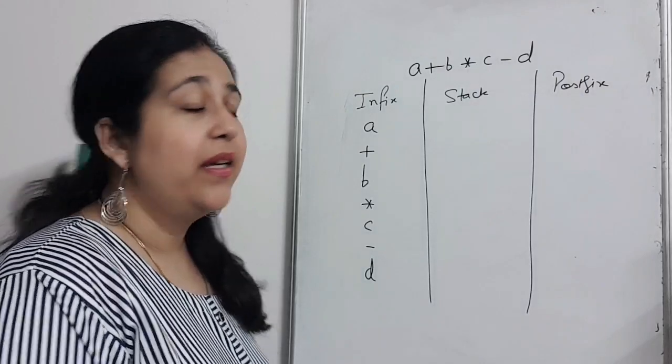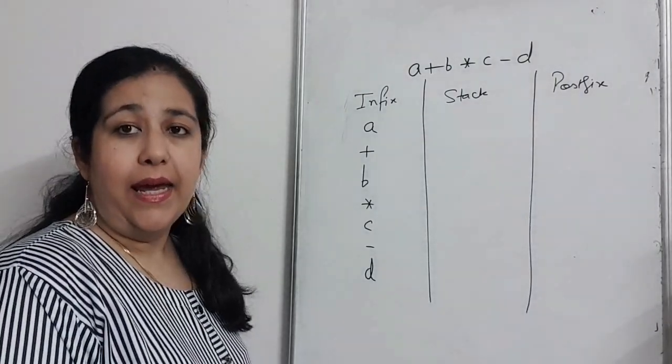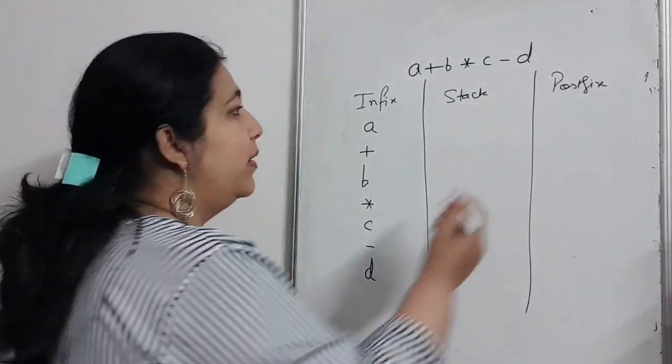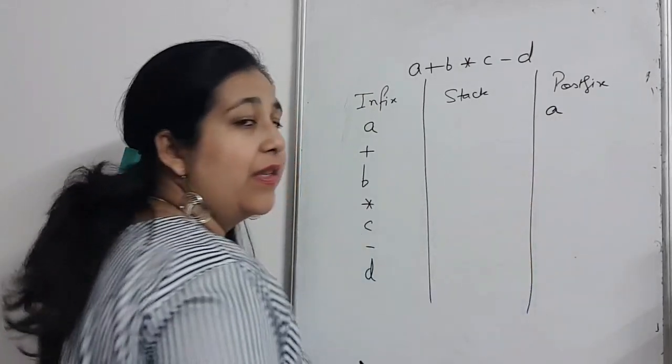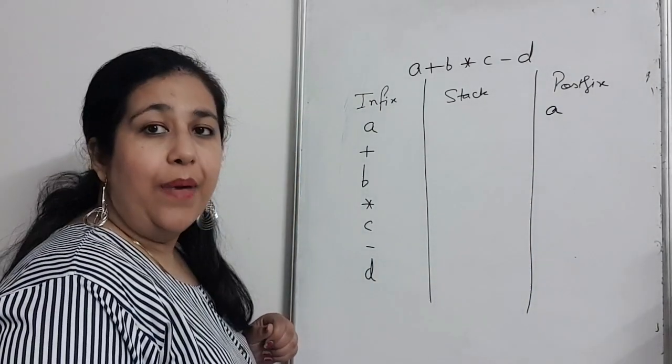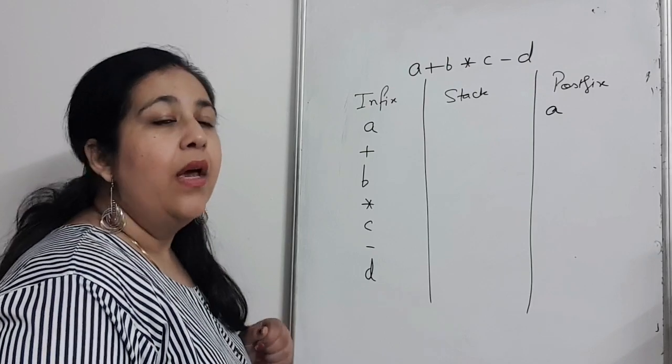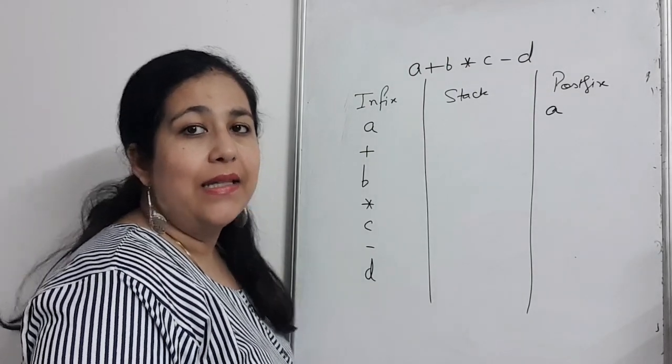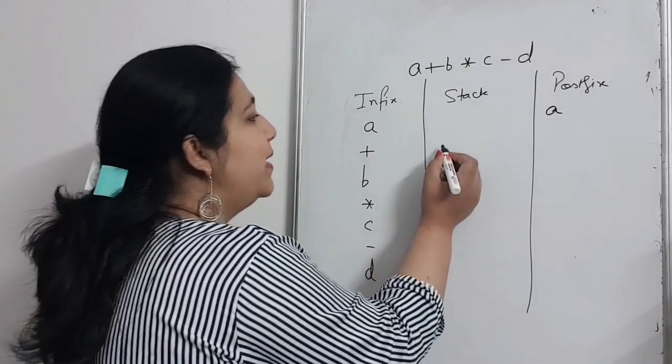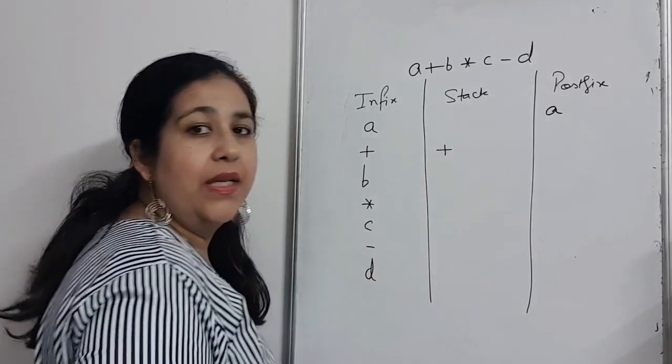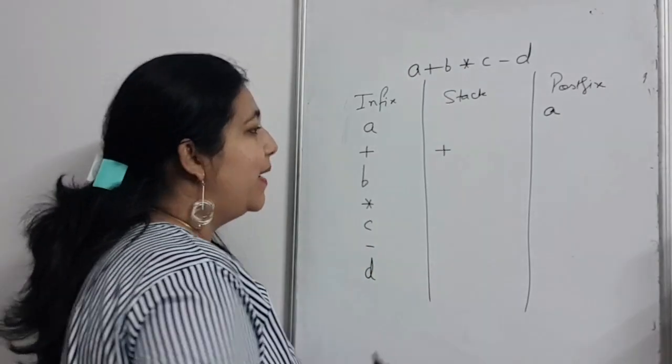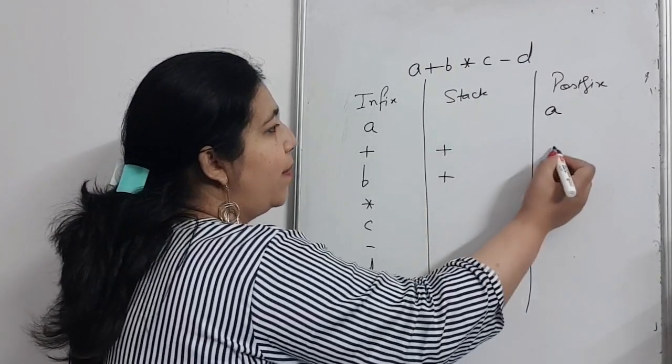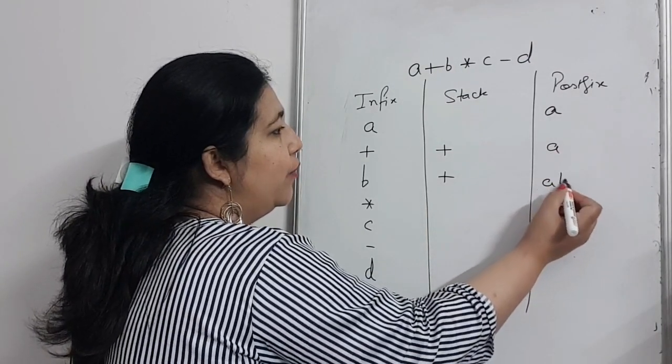Let's see how it works. First of all, A is an operand. Operand directly goes where? Postfix. Then the operator is next, which is plus. Plus is an operator. If stack is empty, then the operator can go directly to stack. So plus goes directly to stack. Then B is operand, goes to postfix.